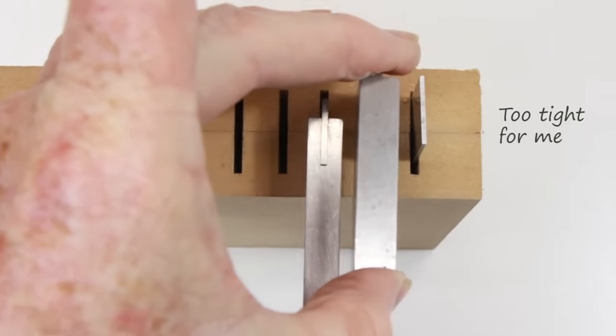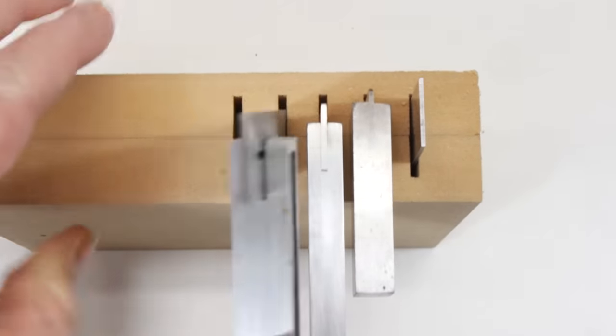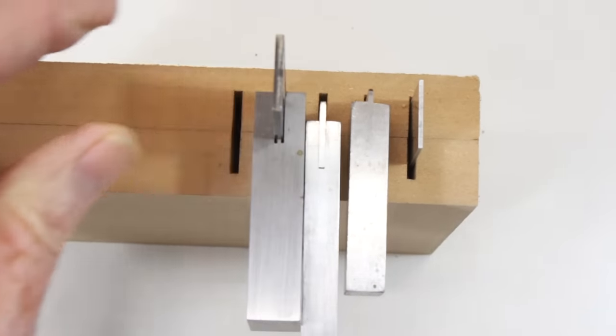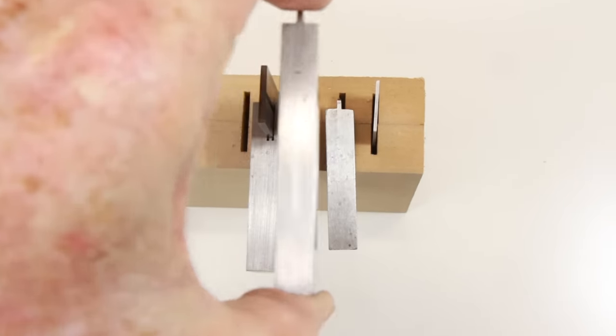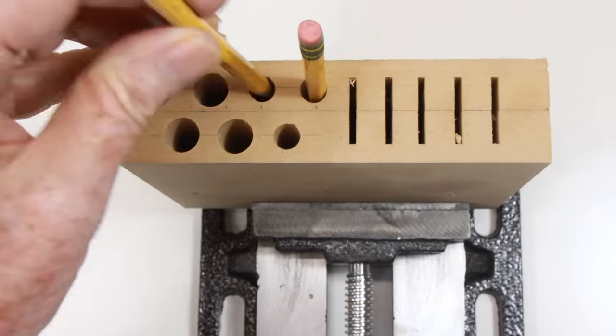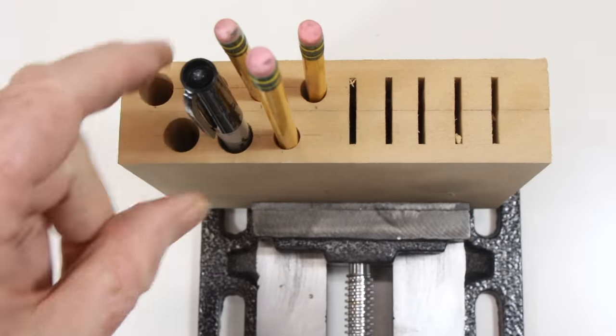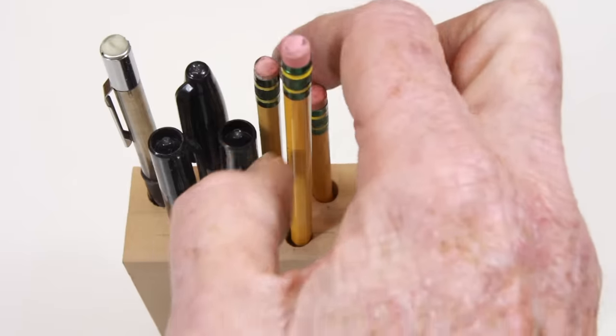For my tri-squares, spacing the slots one half inch or 13 millimeters apart is just too close. Three quarters of an inch or 19 millimeters is the minimum from my point of view. Maybe you'd be happier with even more space. Pencils and pens are in and out of their holes constantly. This spacing is just too tight for fast access. I need room for my fat fingers.